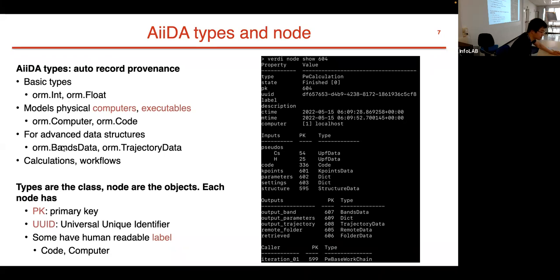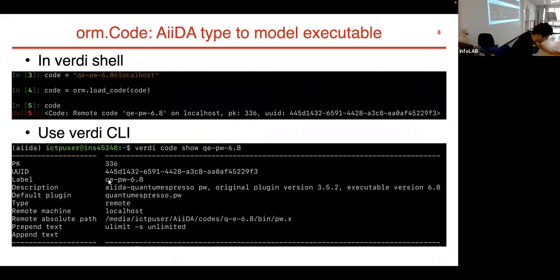These types are like Python classes, and nodes in AiiDA are like objects. Each node has a pk (primary key, an integer) and a uuid (universal unique identifier) to identify it. Some nodes also have a human-readable label — for example, a code has the label qepw 6.8. In the verdi shell, you can use orm.load_code to load your code into the IPython environment, or use the verdi command line interface with verdi code show to display the configuration, such as the absolute path of the executable.